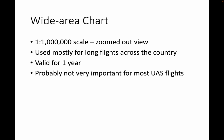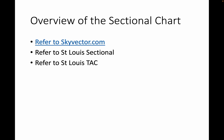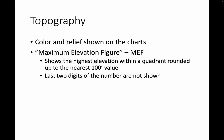There are also wide area charts, which are used for very long flights across the country. Again, these are not as important for UAS flights. Most of the time you're just going to SkyVector.com and using the section that you need. You can also access sectional charts on SkyVector.com and we'll look at how to do that later.